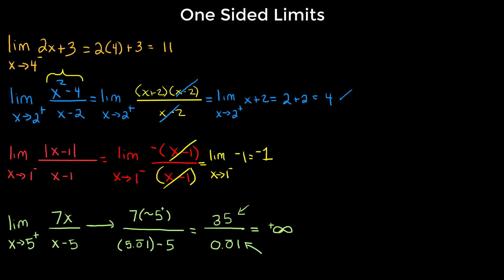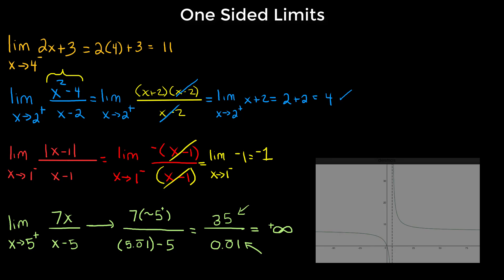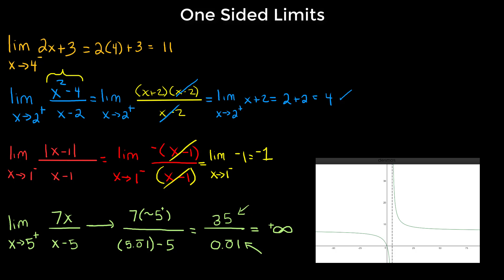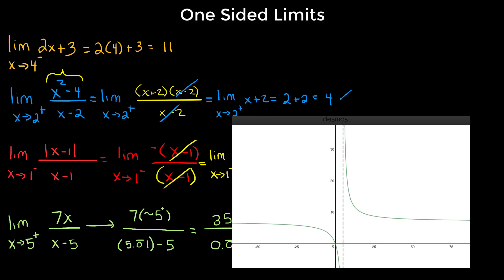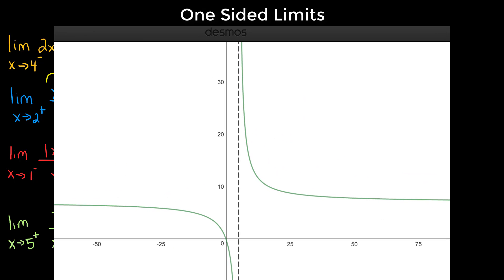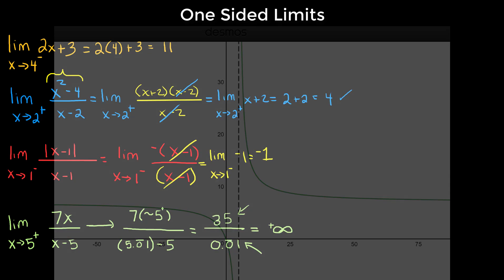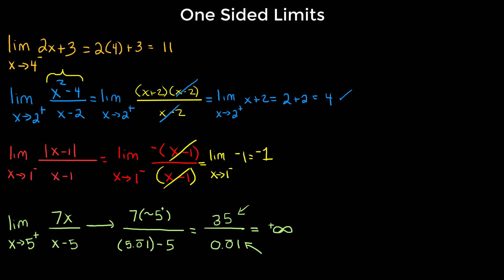Looking at the graph of 7x / (x - 5) as x approaches 5 from the right, we can see that the limit is positive infinity — confirming our answer.